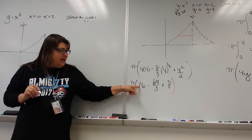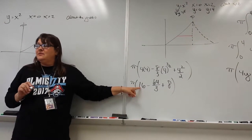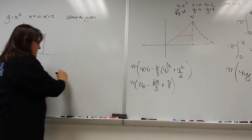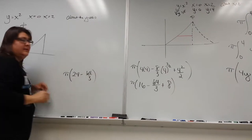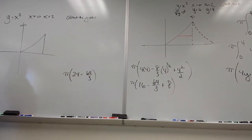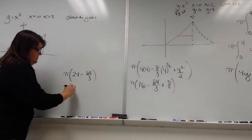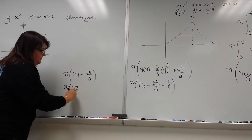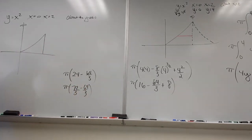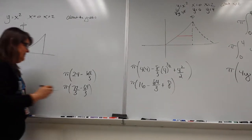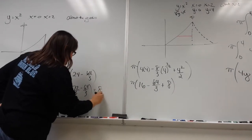Eight plus sixteen is twenty-four. So twenty-four minus sixty-four-thirds: twenty-four times three would be seventy-two; seventy-two minus sixty-four is eight; eight-thirds, which is two and two-thirds. So the answer is two and two-thirds pi. Good job — that's the whole kit and caboodle.